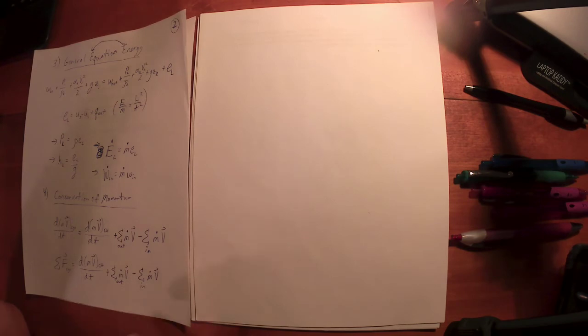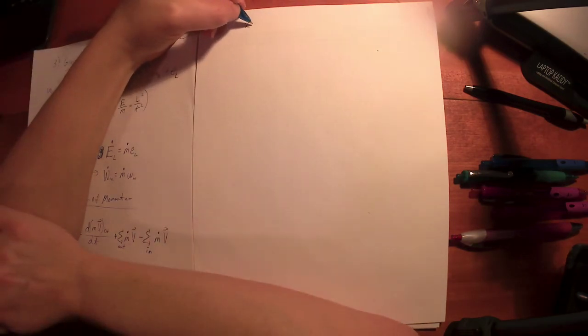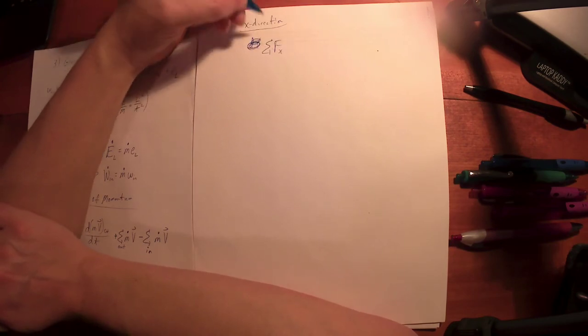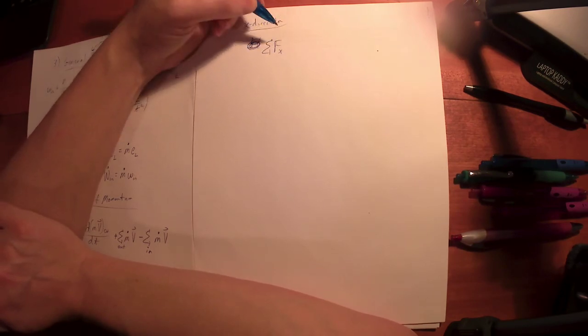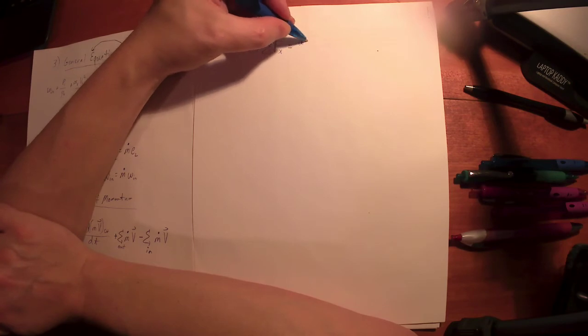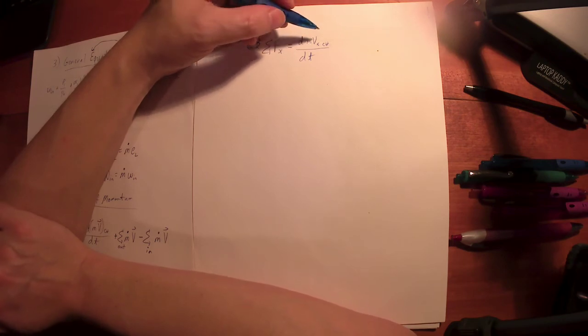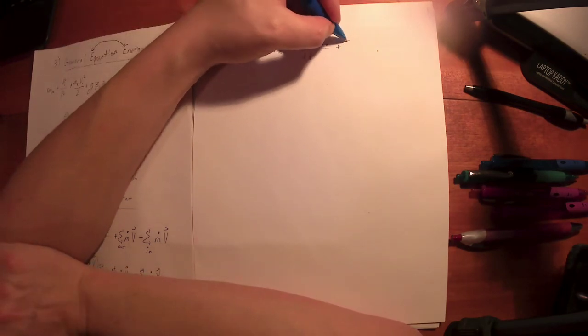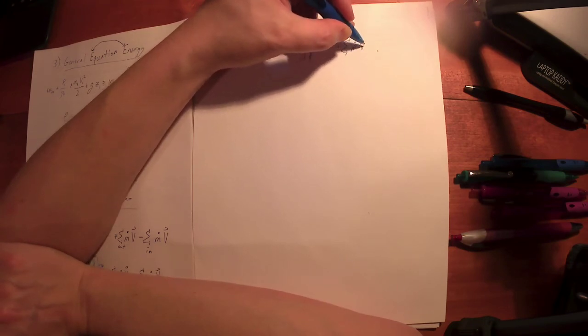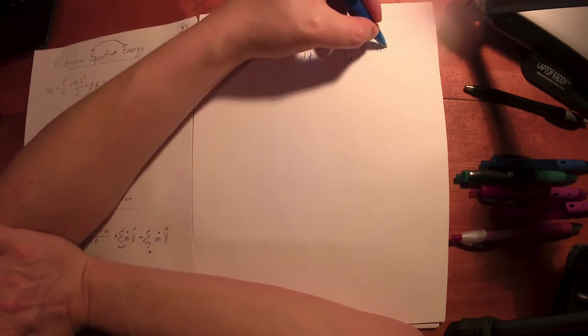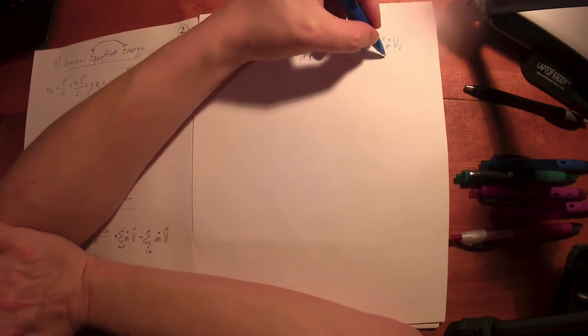Again, as I said, this is a vector equation. So normally what we do is we say, well, let's just look in the x direction. We say the change in, the sum of forces in the x direction, add up all the forces applied to our system or control volume in the x direction. That's going to equal the change in momentum in the x direction for our control volume. Normally that is zero, unless the control volume is moving. Plus again, the sum of all of the rate of mass times the velocity in the x direction at all the outlets, minus the sum of all the m dots times the velocity in the x direction at all the inlets.